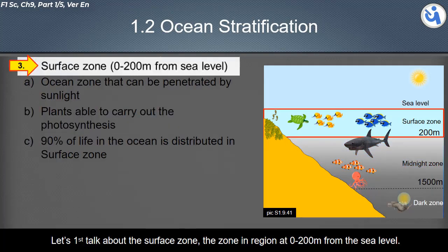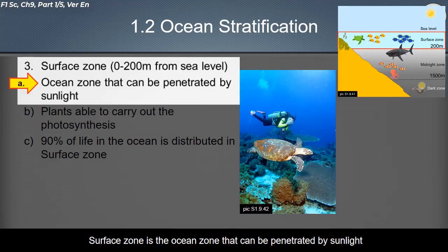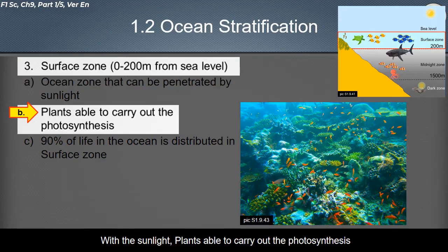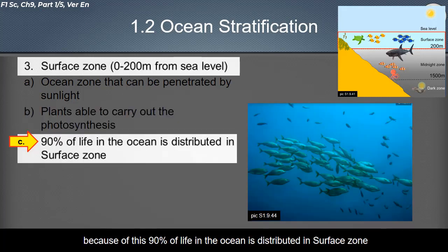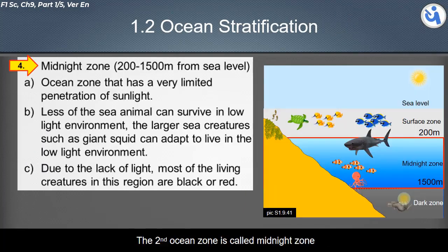The surface zone is the region from 0 to 200 meters from sea level. It is the ocean zone that can be penetrated by sunlight, allowing plants to carry out photosynthesis. Because of this, 90 percent of life in the ocean is distributed in the surface zone.